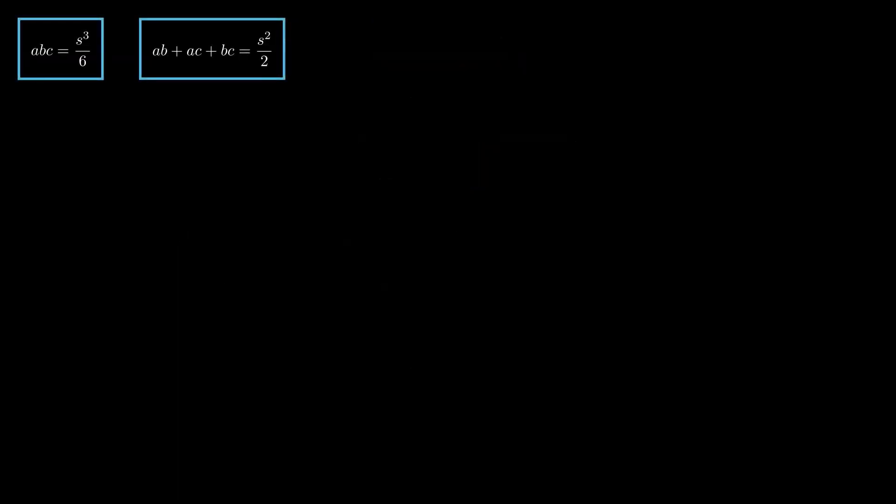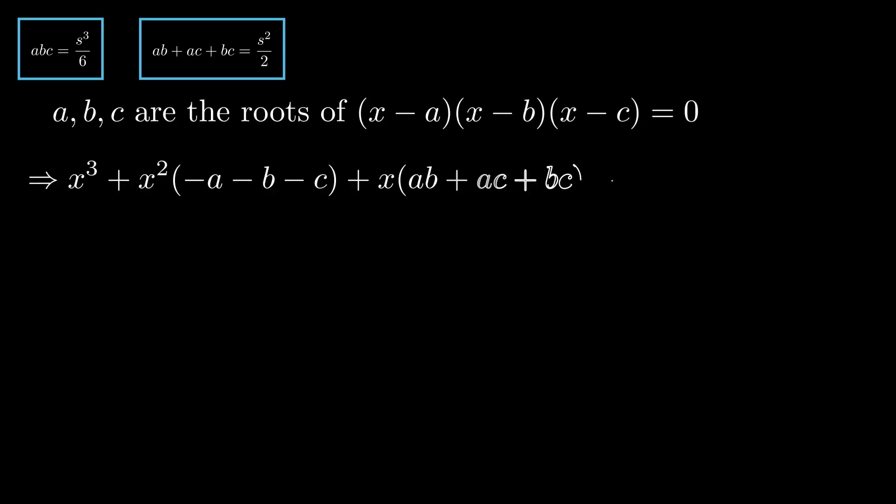The roots A, B, and C satisfy the polynomial given by the product of X minus A, X minus B, and X minus C. Expanding this polynomial and using the blue box results, we can express the coefficients in terms of S. Alternatively, we could also find the coefficients using Vieta's formulas.